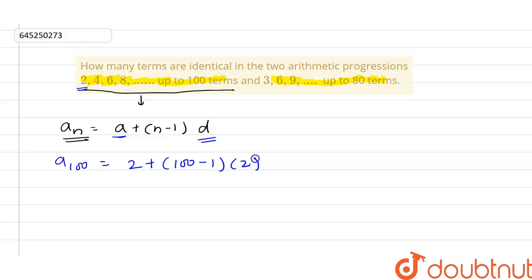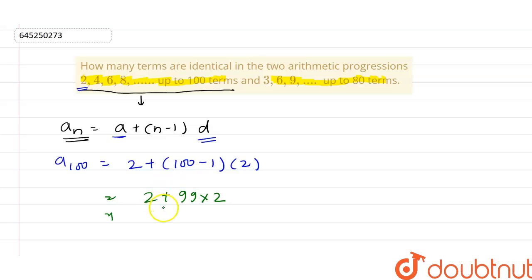So a₁₀₀ = 2 + (99 × 2) = 2 + 198 = 200. This means the 100th term in the first AP is 200.